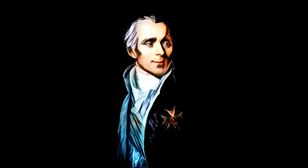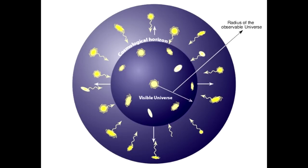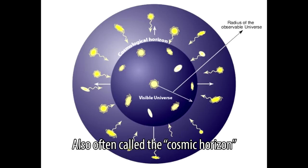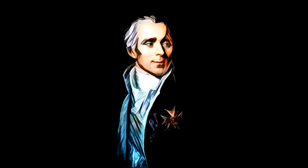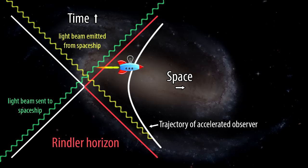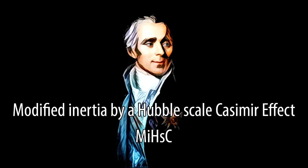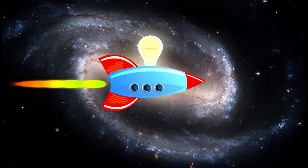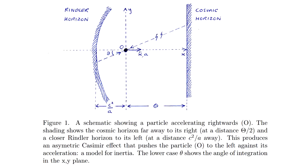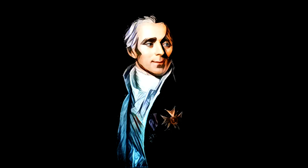There are regions in the universe whose light will never reach us, because the universe is expanding and light hasn't had enough time to catch up. These regions are covered by what we call a cosmological horizon. Something similar happens if you're accelerating — some regions of the universe will be hidden from you, covered by what we call a Rindler horizon. McCulloch's claim is that Unruh radiation can only come in wavelengths that fit between the cosmic horizon and the Rindler horizon. That's a rather strong assertion made without justification — there's no physical mechanism that would cause this, but I'll take it.